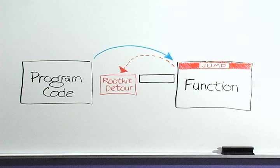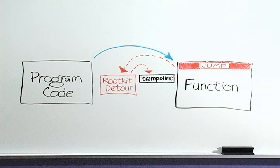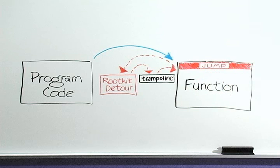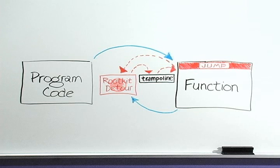The rootkit code now runs the original function. However, because part of the original code has been moved, right now the function can't function. So the rootkit calls that first bit of code, referred to as the trampoline, which allows the function to resume as it normally would after the jump point. This little swap fools the function into believing that the rootkit code is the origin of the request. So when the function is done, it returns its results to the rootkit. The rootkit code can then decide which parts of the results to pass to the real program.